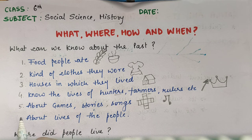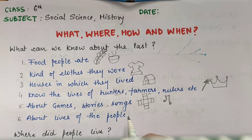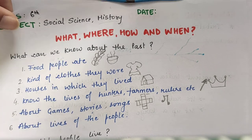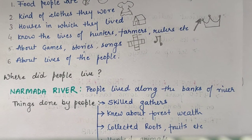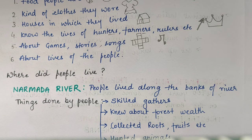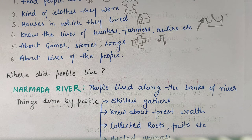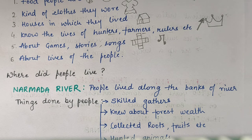Now sixth, about the life of the people — how people were living. Now, where did people live? The question occurs that loog rahte kahan the. So there were few places where people started living, and the most liked area — jhaan pe loog sab se zyada rehna pasand kerte the — it was the bank of the rivers. So in India there are many rivers.